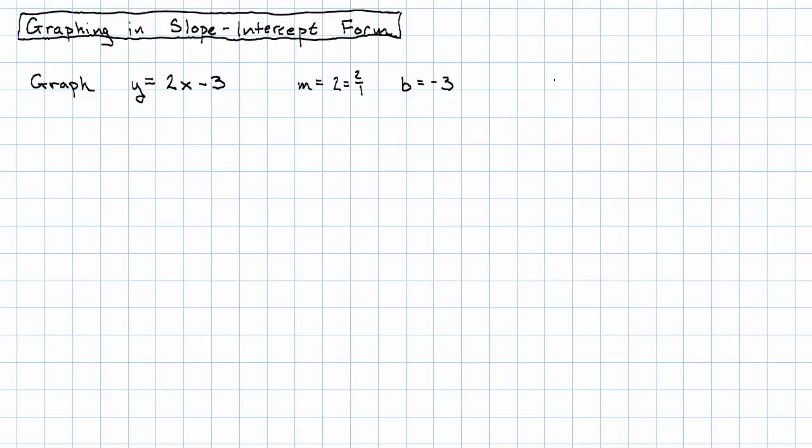It can be helpful to make a small table showing some of the values we're going to want to see on our graph. We're definitely going to want to see x is 0 and y is negative 3. This is the y-intercept.